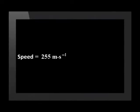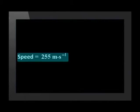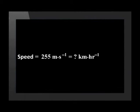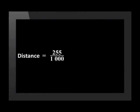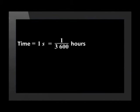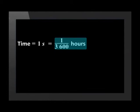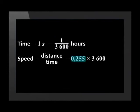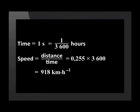Now let's do the reverse conversion. A Boeing 747 jet can travel at an average speed of 255 meters per second. Let's convert this into kilometers per hour. We convert meters to kilometers by dividing by 1,000. Therefore, we divide 255 by 1,000 and get 0,255 kilometers. There are 3,600 seconds in an hour, but since we are now converting from seconds to hours, we know that one second is 1 over 3,600 hours. Therefore, speed is 0,255 times 3,600, which gives us an answer of 918 kilometers per hour.